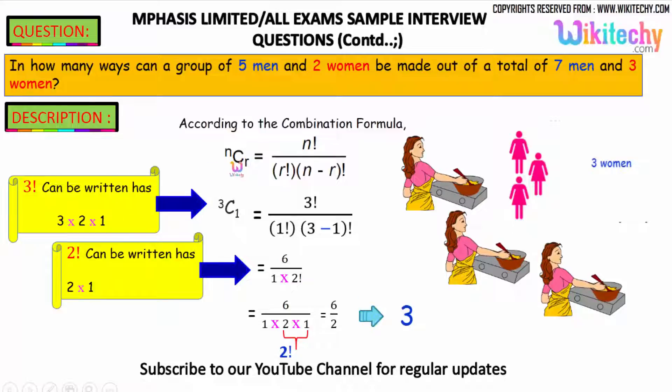3 factorial can be written as 3×2×1. So this is the formula NCR is equal to N factorial divided by R factorial into (N minus R) factorial. We got N as 3, 3 factorial divided by 1 factorial into (3 minus 1), so 2 factorial. 3 factorial can be written as 3×2×1, and 1 factorial is 1, and 2 factorial is 2×1. We got the answer as 6 divided by 2, so the overall answer is 3. So 3C1 is 3.